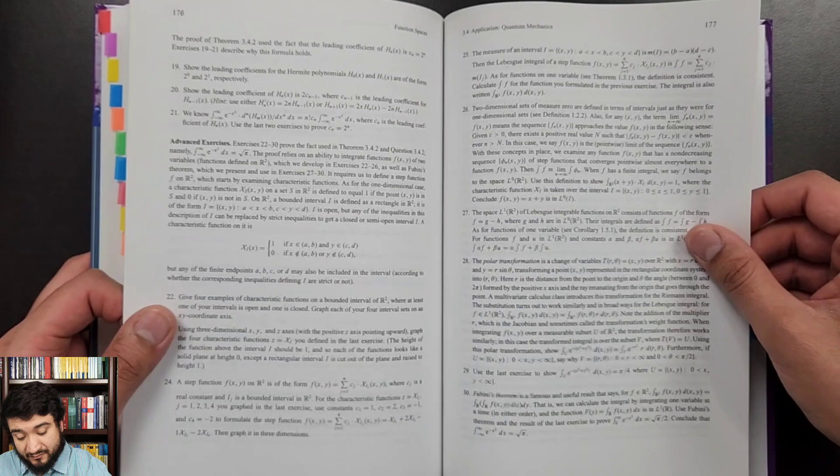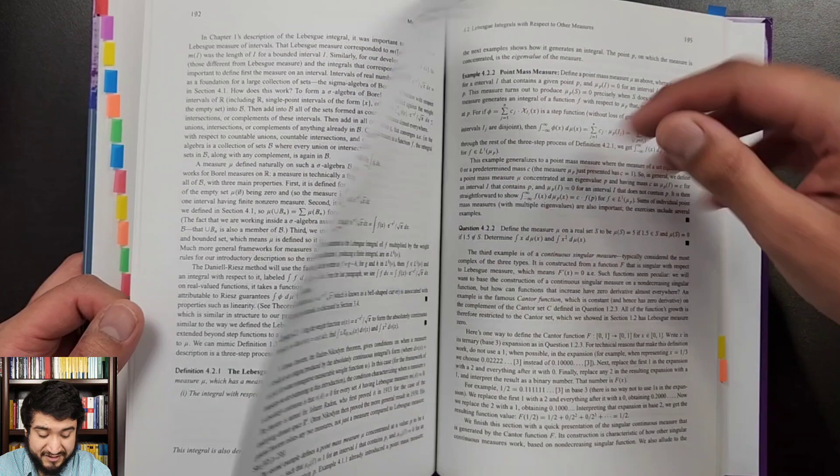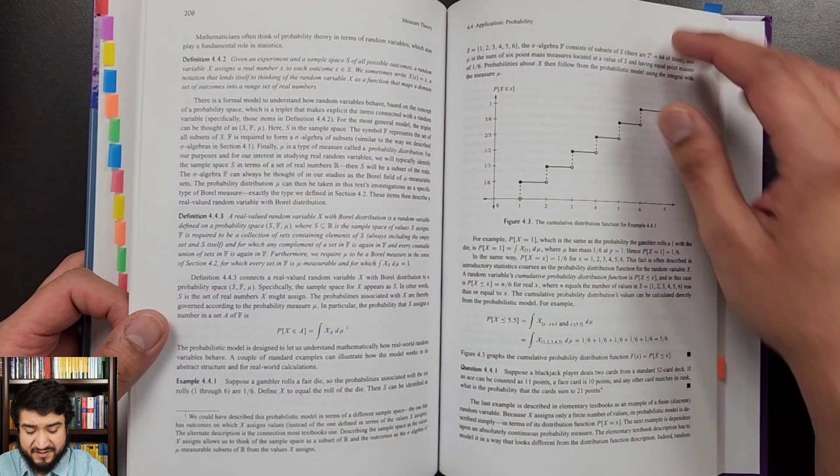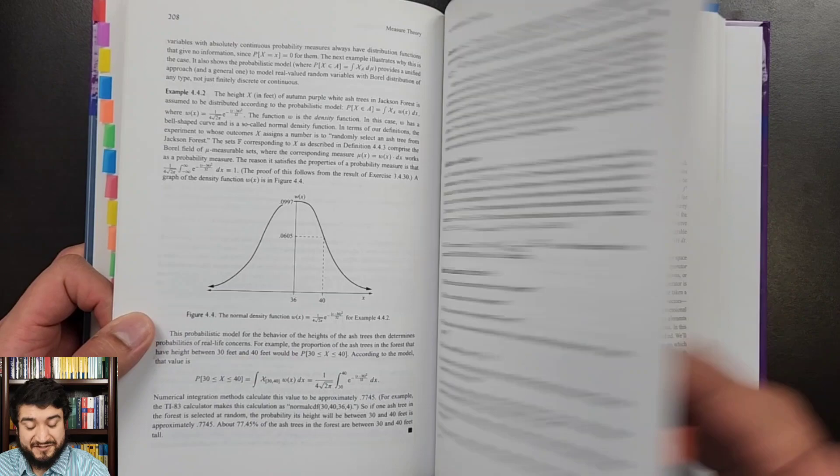Chapter four here, measure theory. So here he just goes over different measures and then the Lebesgue Integral with respect to other measures, and then he even has an application here to probability if you're interested, which is awesome to see. I love anytime I see probability, but like measure theoretic probability, not like the stuff you see of like marbles and stuff like that. I don't know, that doesn't really interest me too much.